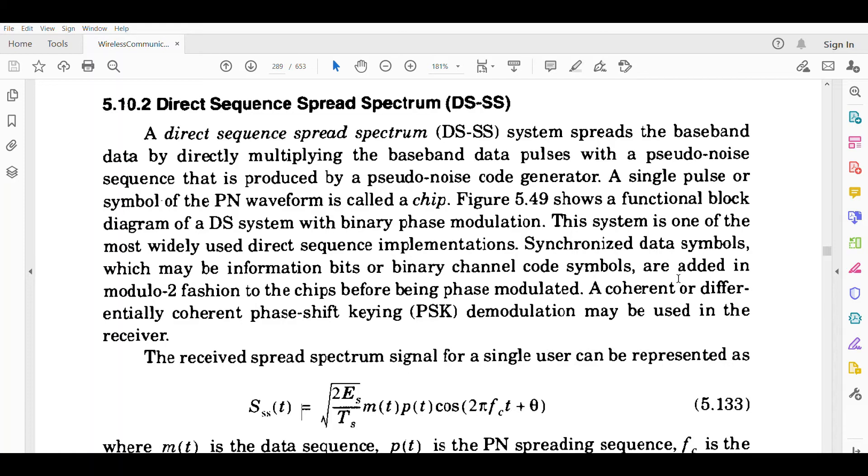A single pulse or symbol of the PN waveform is called a chip. Figure 5.49 shows a functional block diagram of a DS system with binary phase modulation. The system is one of the most widely used direct sequence implementations. Synchronized data symbols, which may be information bits or binary channel code symbols, are added in modulo-2 fashion to the chips before being phase modulated. A coherent or differentially coherent phase-shift demodulation may be used in the receiver.